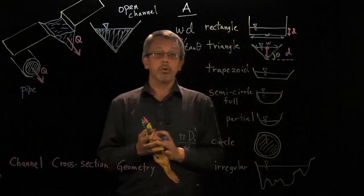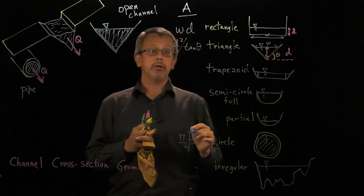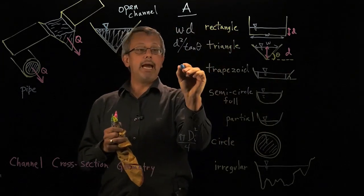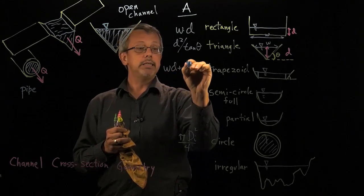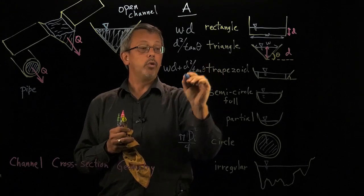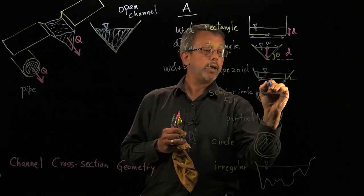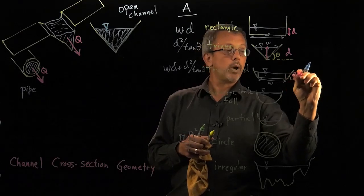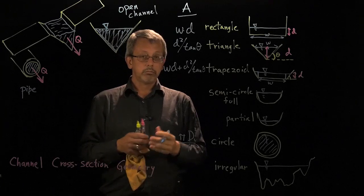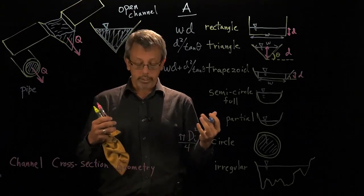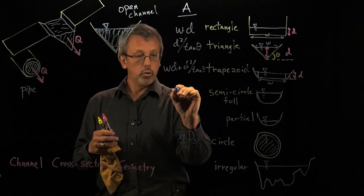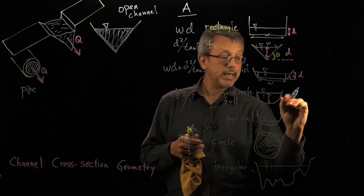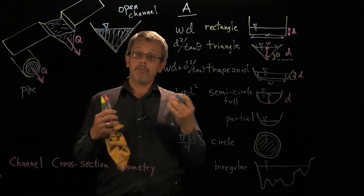For a trapezoid, we treat it as a rectangle plus two triangles on the sides. Combining the formulas from above, the area equals w·d + d²/tan(θ), where w is the bottom width and d is the water depth. For a full semicircle — where depth equals the radius — the area equals one-half π d², with d representing depth equal to the radius.